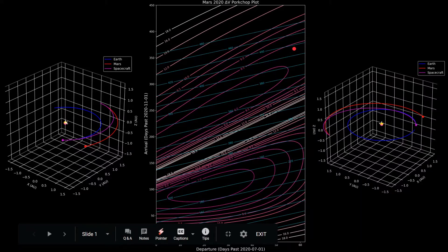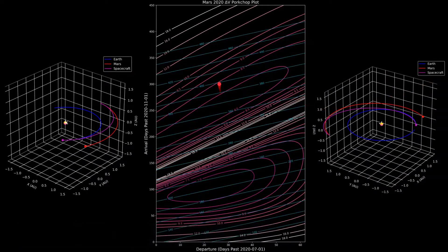Now notice there is a gap here in the plot in this section. This line separates trajectories that have a change in true anomaly less than 180 degrees, which is the short way, below the gap. And above the gap is for trajectories that have a change in true anomaly greater than 180 degrees, which will have longer travel times as you can see by the blue lines.